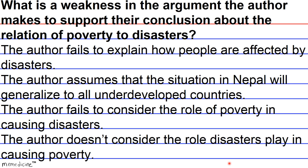Answer choice B correctly identifies the weakness of this type of reasoning. The author is assuming that the situation in Nepal will generalize to other underdeveloped countries, and it may or may not. There are other extraneous factors that have to be considered. All right. Thank you.